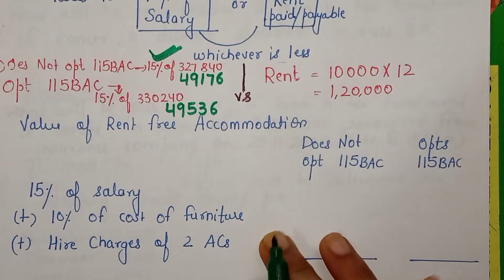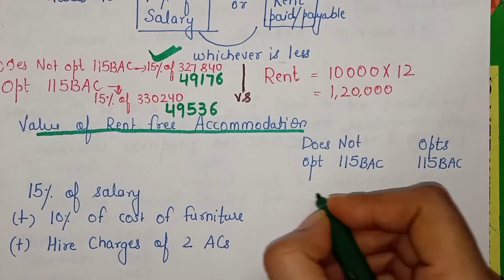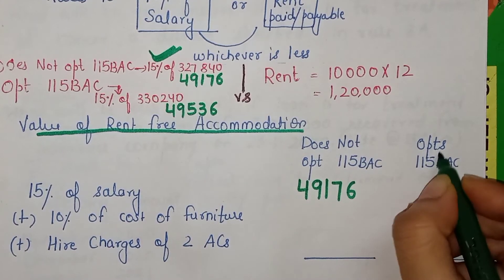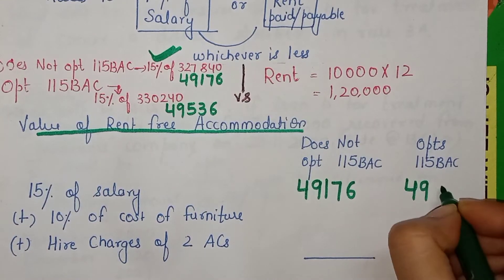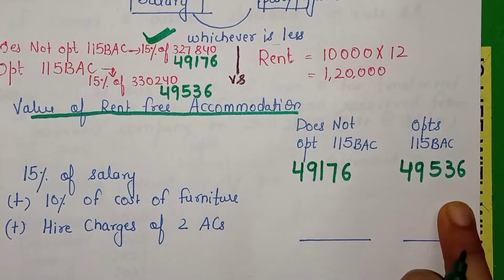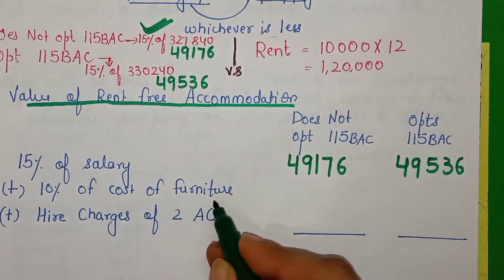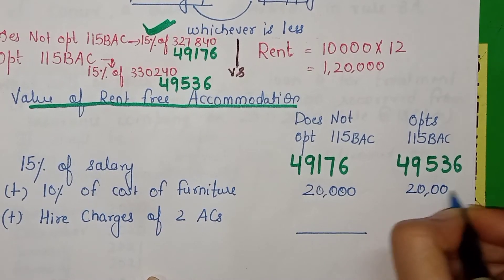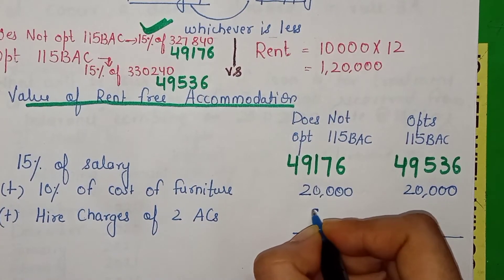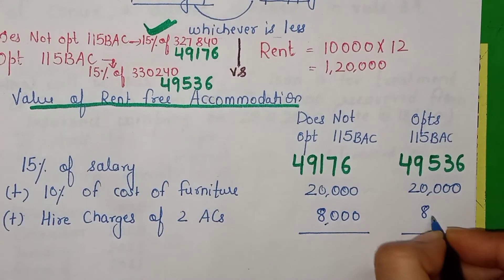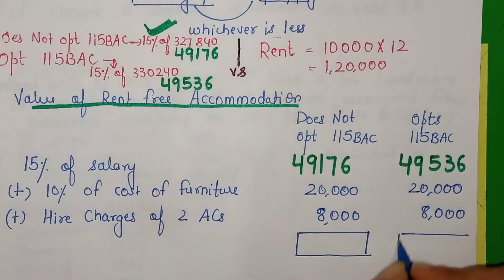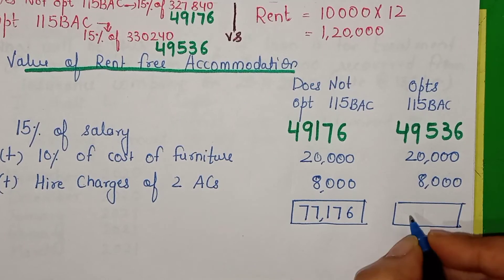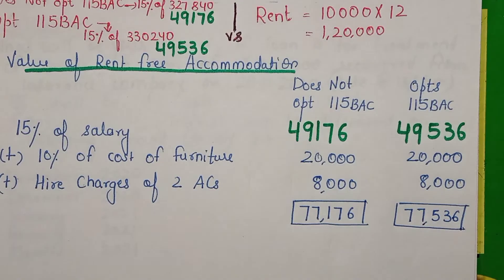So the value of rent-free accommodation starts with the 15% of salary figure. Without Section 115 BAC: 49,176; with Section 115 BAC: 49,536. To both figures we add 10% of furniture cost (employer's own, 2,00,000) = 20,000 — same for both cases. We also add hire charges for 2 ACs at 4,000 per AC = 8,000 — same for both cases. Final value of RFA: without 115 BAC = 77,176; with 115 BAC = 77,536.